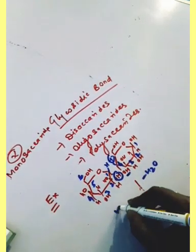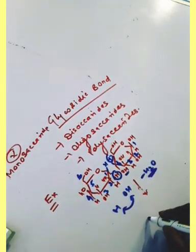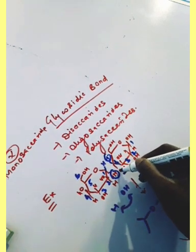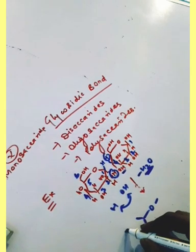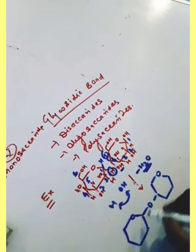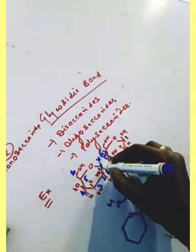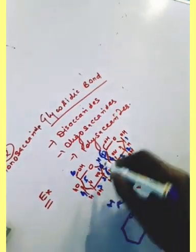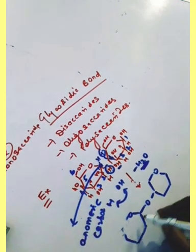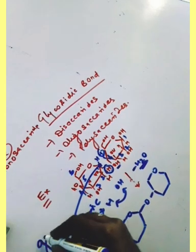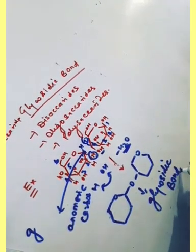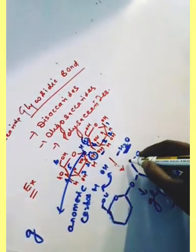One hydrogen and one OH will be released out, meaning one water molecule is released. So this bond will be formed here. This carbon is called the anomeric carbon. And this bond that is formed is called the glycosidic bond.